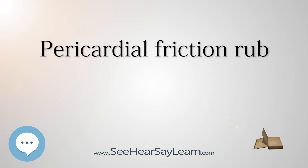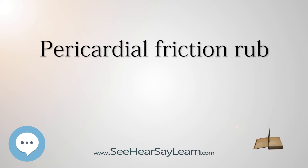Differential Diagnosis. Pericardial friction rub is one of several similar sounds. A differential diagnosis may be possible, or not, depending upon the number of components that are audible. Pericardial friction rub may have one, two, or three audible components, whereas the similar pleural friction rub ordinarily has two audible components. One and two component rubs are ambiguous. A three-component rub distinguishes a pericardial rub and indicates the presence of pericarditis.